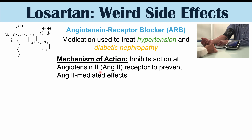Losartan works by inhibiting the action of angiotensin 2 through inhibiting its receptor. Angiotensin 2 is a hormone that normally activates angiotensin 2 receptors — specifically the AT1 receptor — to cause vasoconstriction, meaning it squeezes down on blood vessels. By inhibiting angiotensin 2's effects, we get the opposite: vasodilation, opening up of blood vessels, and a reduction in blood vessel pressure. That's one way Losartan reduces blood pressure.